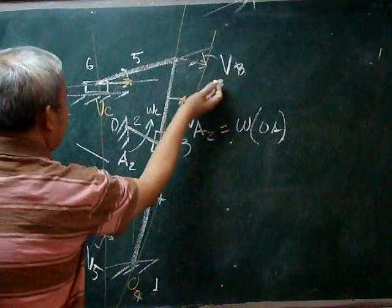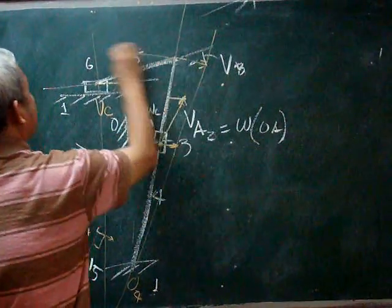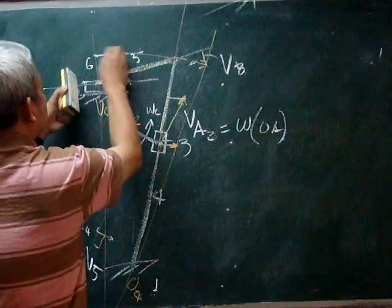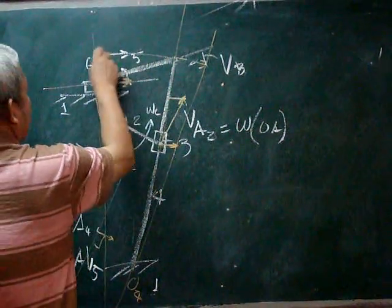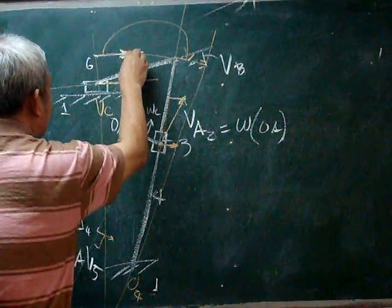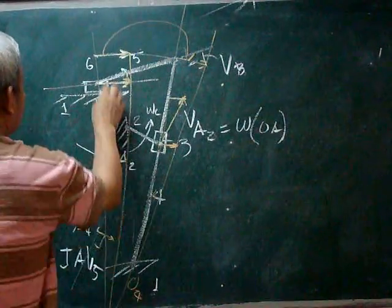With that, we can make the arc passing through point B and transfer this vector here. We transfer the vector to the same position and make the proportionality line. This confirms the velocity of point C.